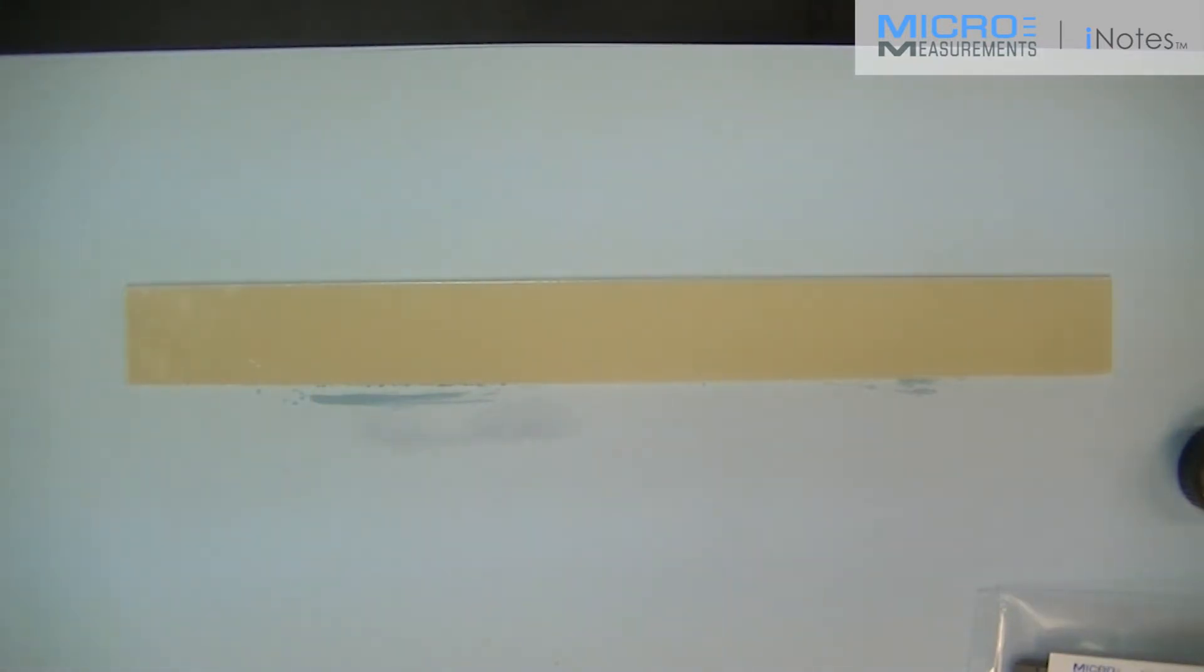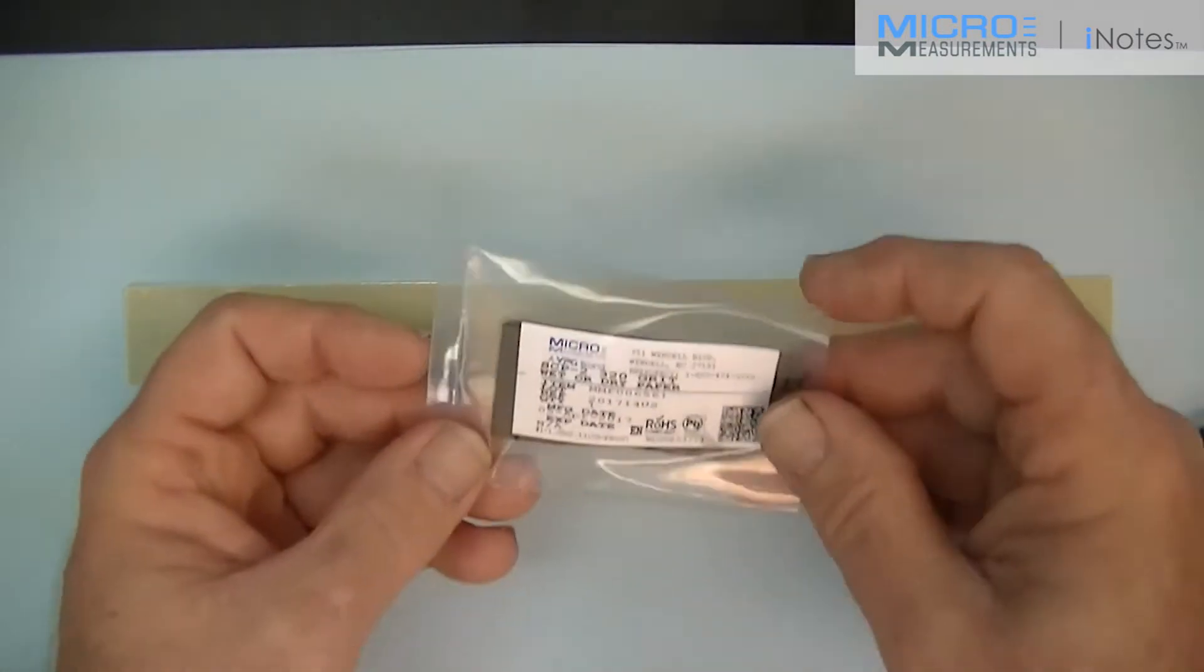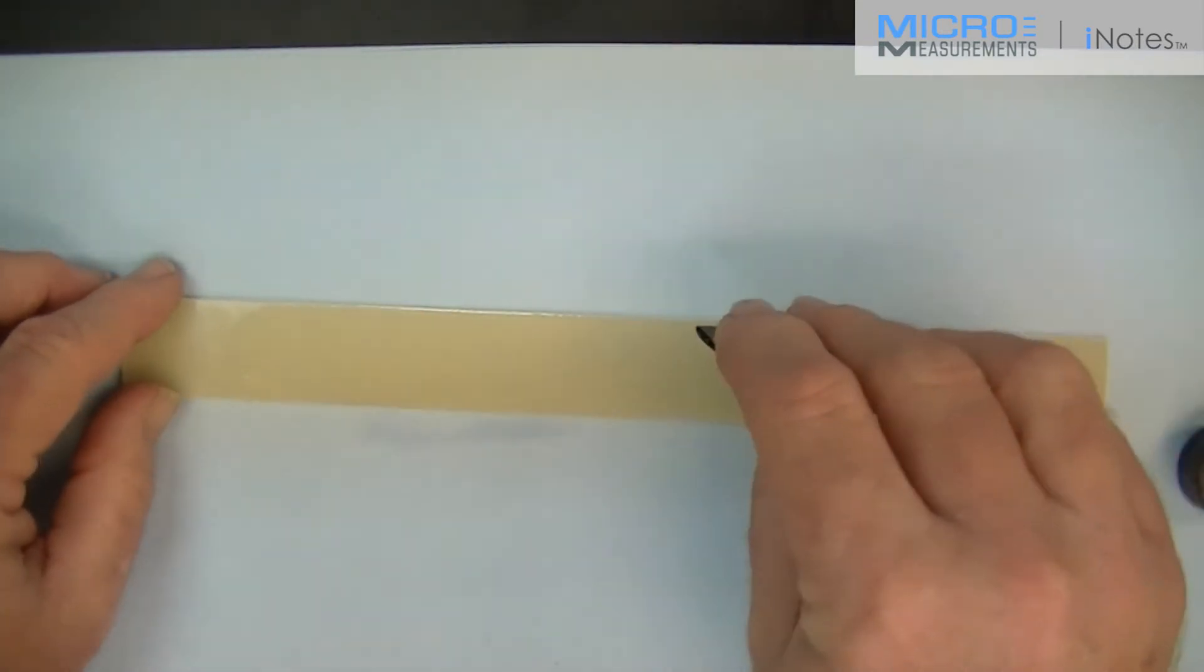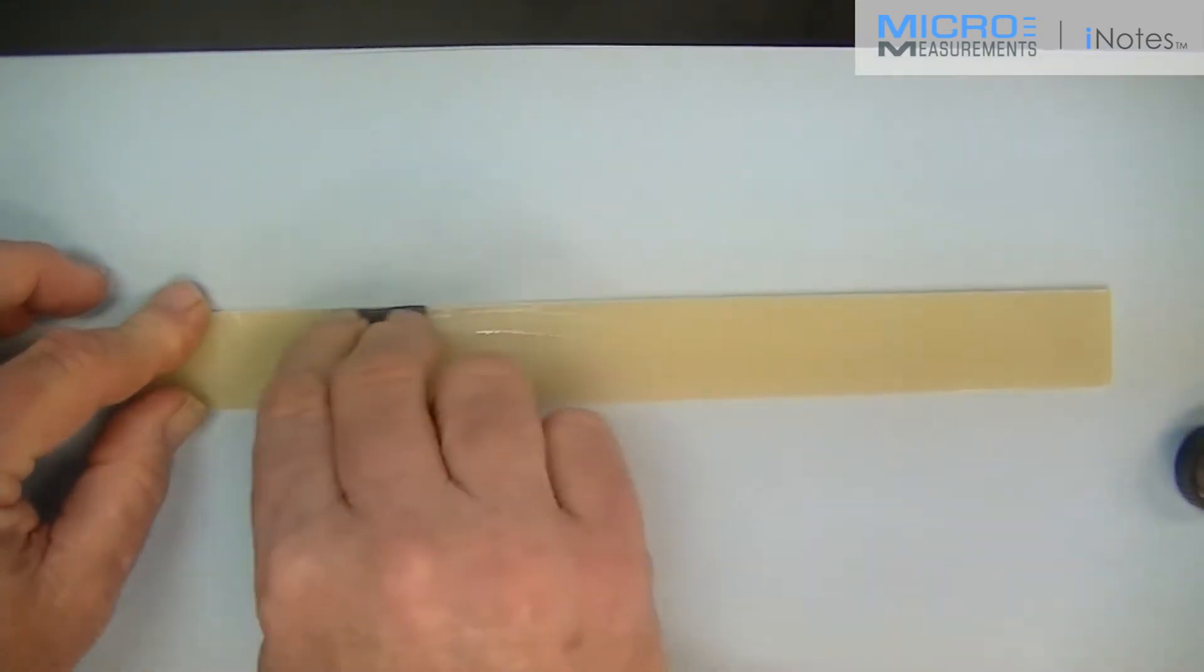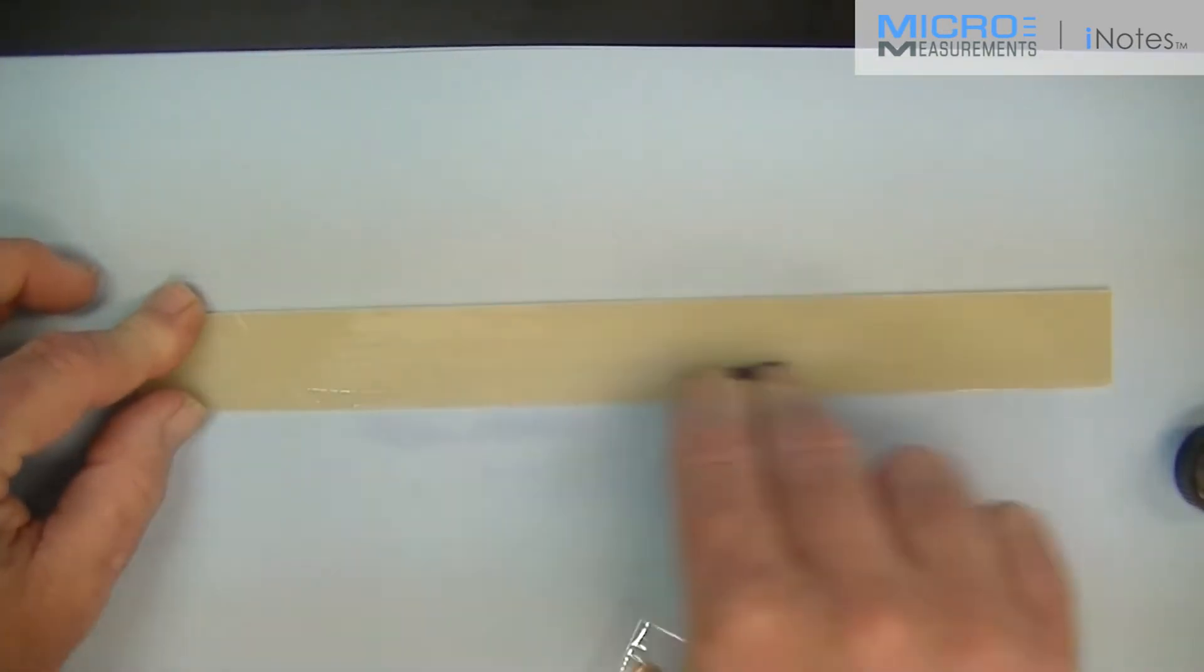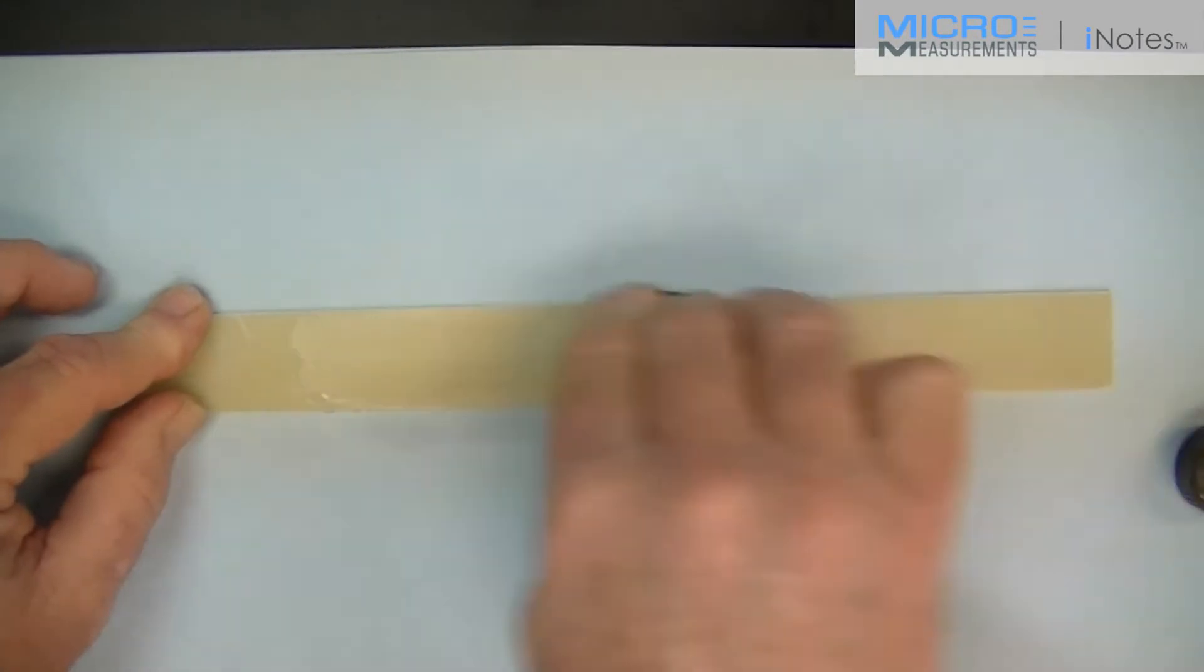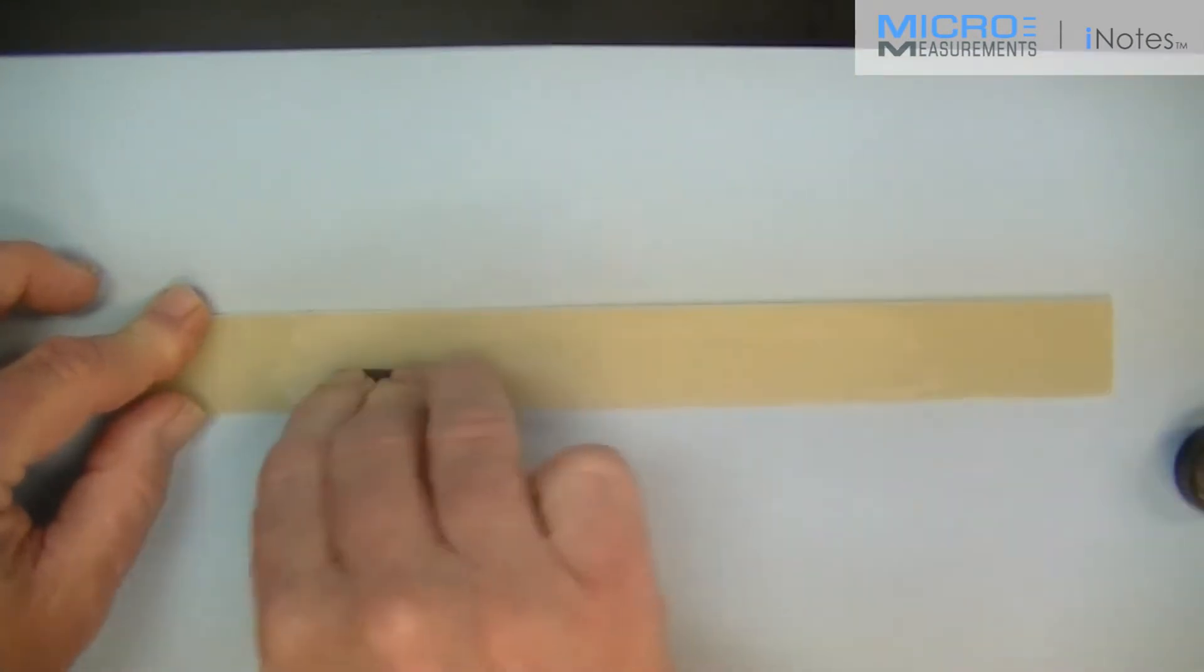The next step is to locate the SCP-2, the 320 grit silicon carbide abrasive paper. I'm going to tear off a single fold about two inches long and I'm going to dry-abrade the beam. 10 or 12 strokes is sufficient. We just want to make a little surface roughness.